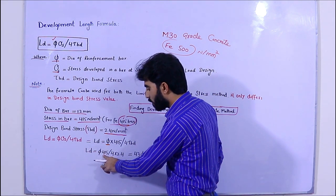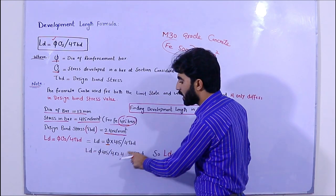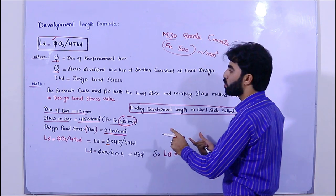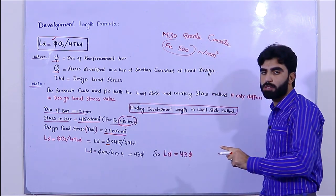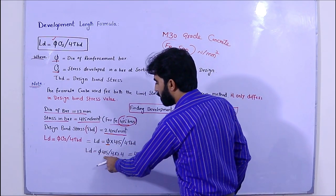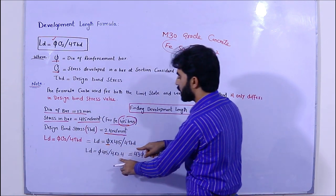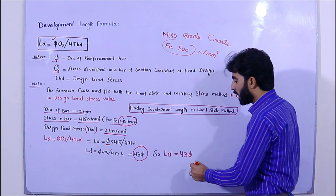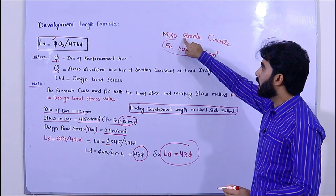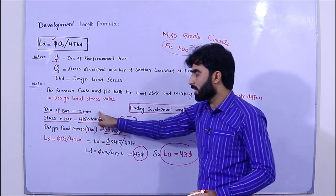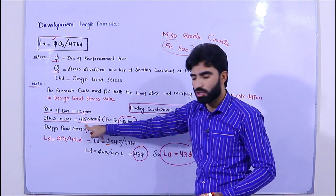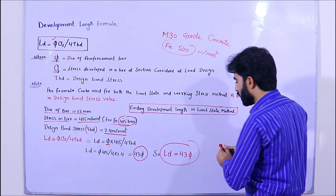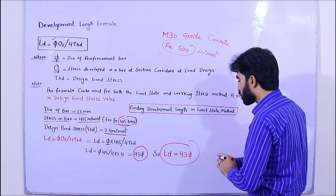So Ld = 415 / (4 × 2.4) = 43 · φ. This formula can be used for both the limit state method and the working stress method. Therefore Ld = 415 / (4 × 2.4) = 43 dia. It means the development length for M30 grade concrete with a 12 mm diameter bar and Fe415 steel should be 43 times the bar diameter.